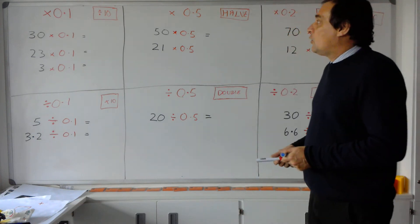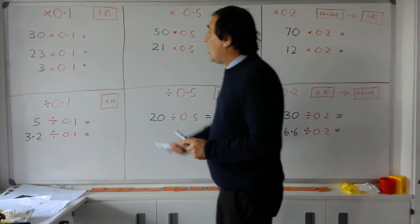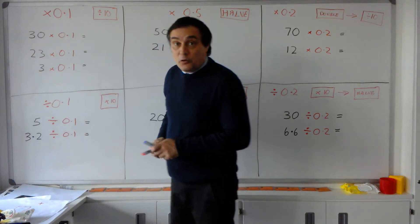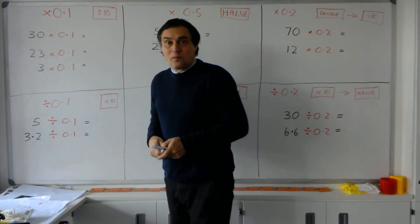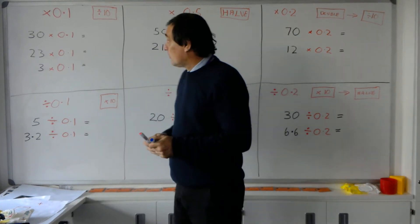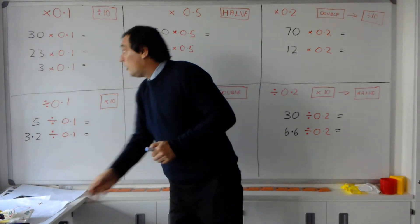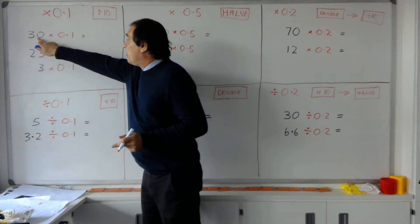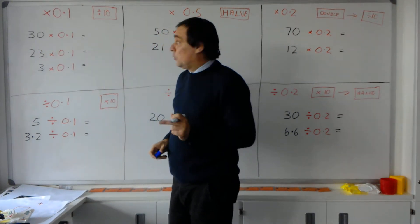If I'm actually multiplying or asked to multiply a number by 0.1, what it really means is I'm dividing it by 10. So if you remember that one.